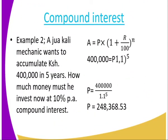Example 2: A mechanic wants to accumulate $400,000 in 5 years. How much money must he invest now at 10% per annum, compounded interest? Using the formula: $400,000 = P × (1 + 10/100)^5 = P × 1.1^5. Dividing both sides by 1.1^5, the principal is $248,368.53.